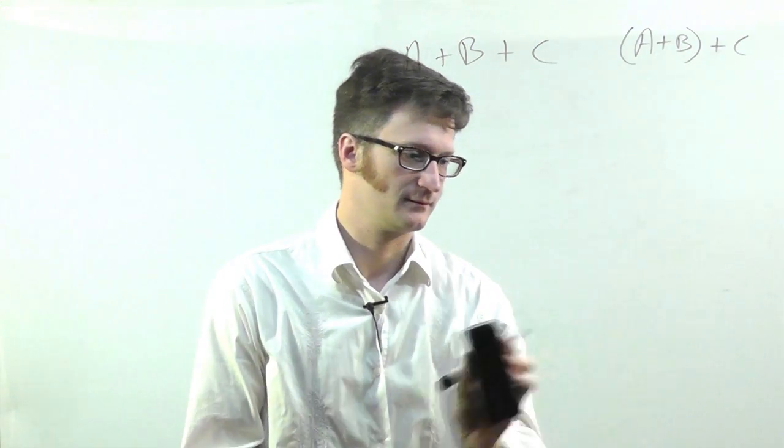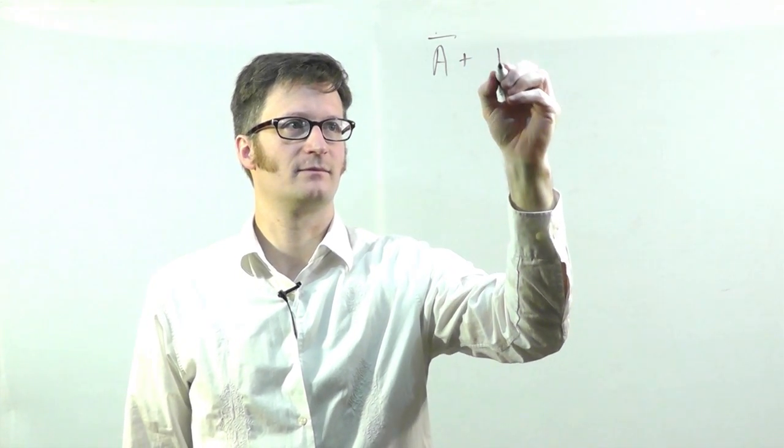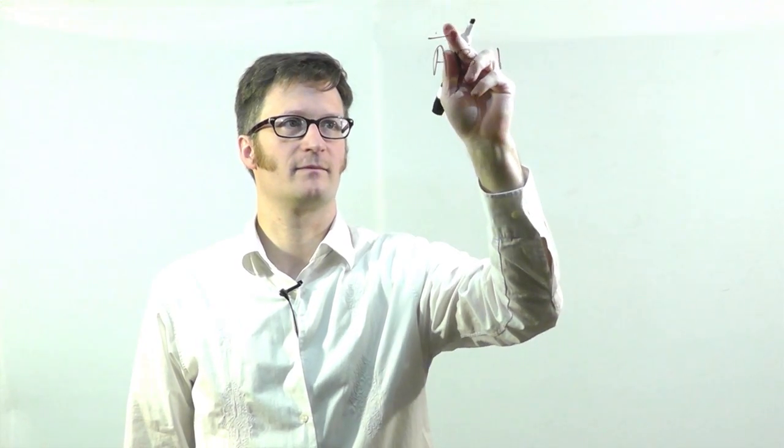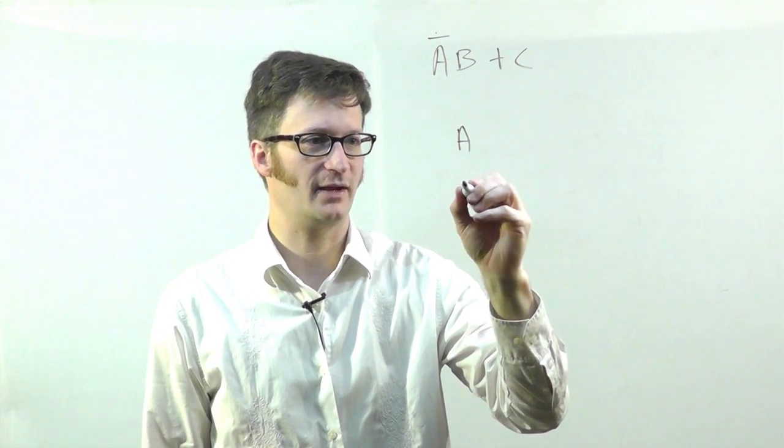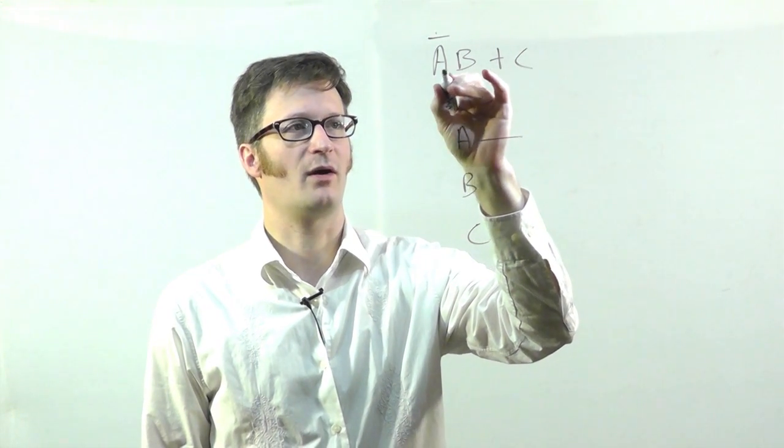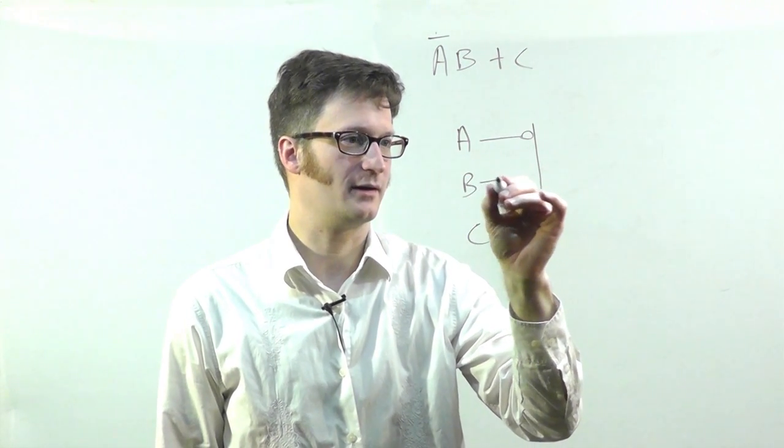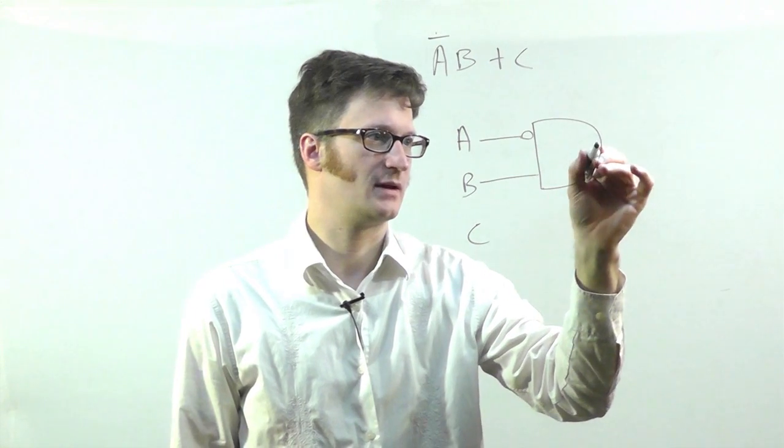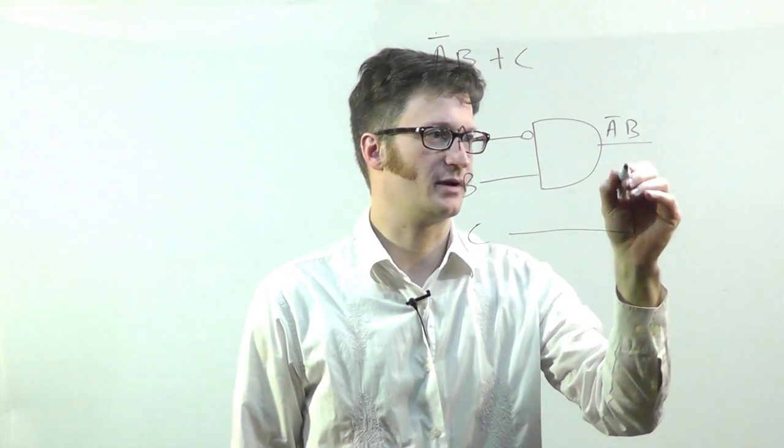Let's see. How about A bar B or C? Alright, if this is my inputs, I could have it like this. So this is A bar AND B. So I just put a little inversion bubble on the input of an AND gate. And at this point, I have A bar B. And we can just bring C over.